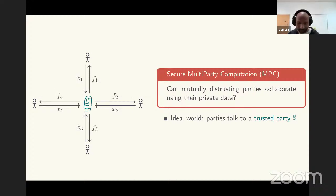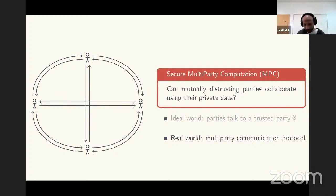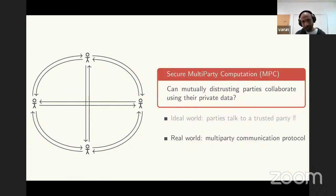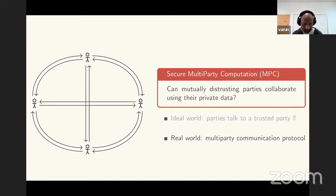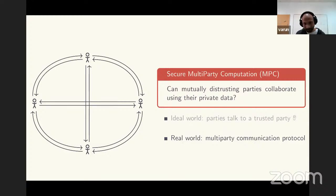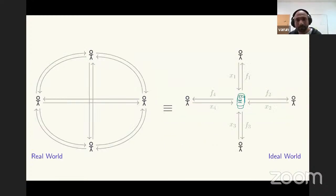The trusted party computes the required functions and communicates the outputs back to the respective parties. The objective of MPC is to remove this dependence on a trusted party — we want protocols run by the parties themselves that ensure the required security. We say a multi-party communication protocol is secure if it emulates this ideal setting with the trusted party.